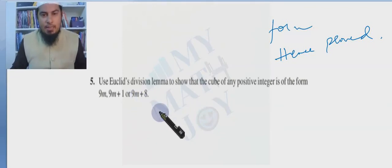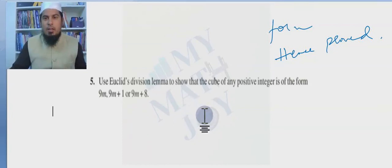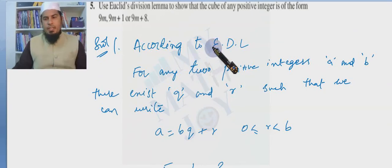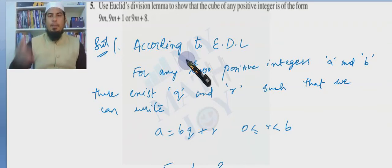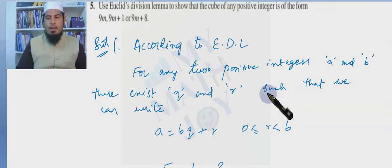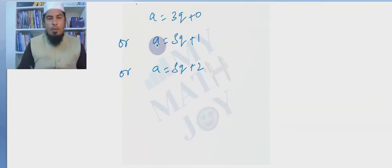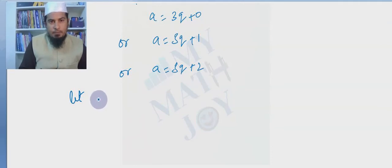According to Euclid's division lemma, for any two positive integers a and b there exist q and r such that a = bq + r with 0 ≤ r < b. For b = 3, any positive integer a can be written as a = 3q, or 3q+1, or 3q+2. We will cube both sides in each case.